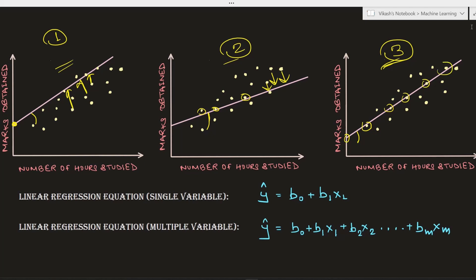You might have a question: although this straight line is doing really well in terms of predicting most data points, what about the ones it is still missing? The answer is that although it is missing a few data points, what we actually wanted to achieve is that the loss with respect to all other data points should be as minimum as possible, and this straight line is doing that for us.